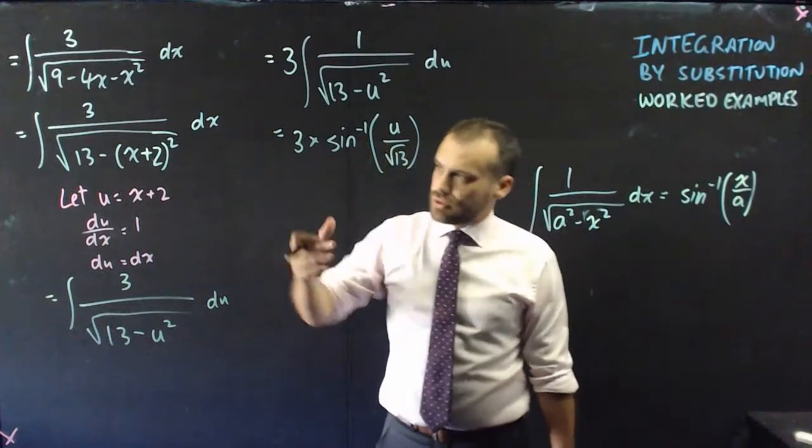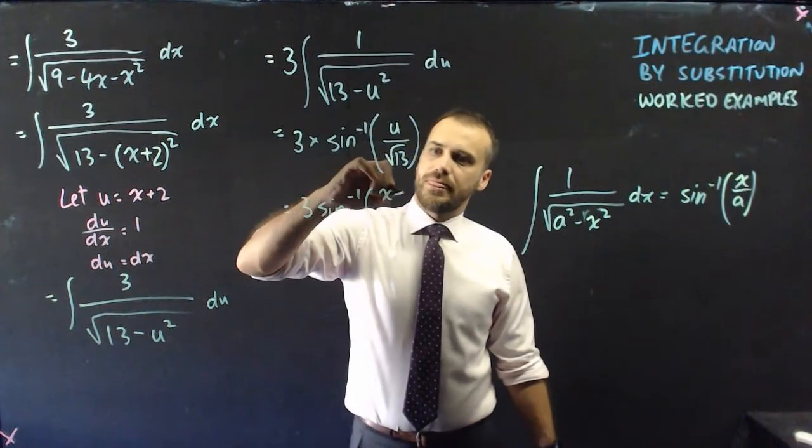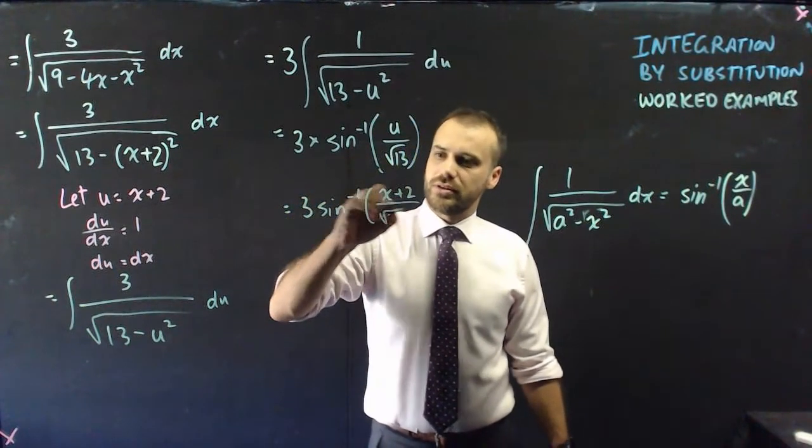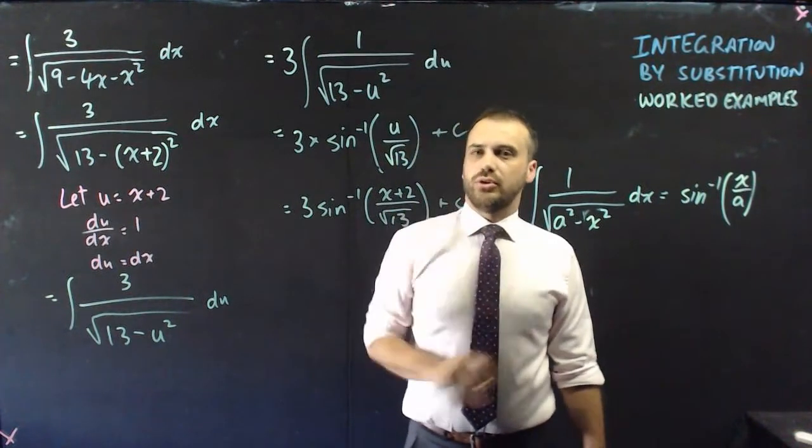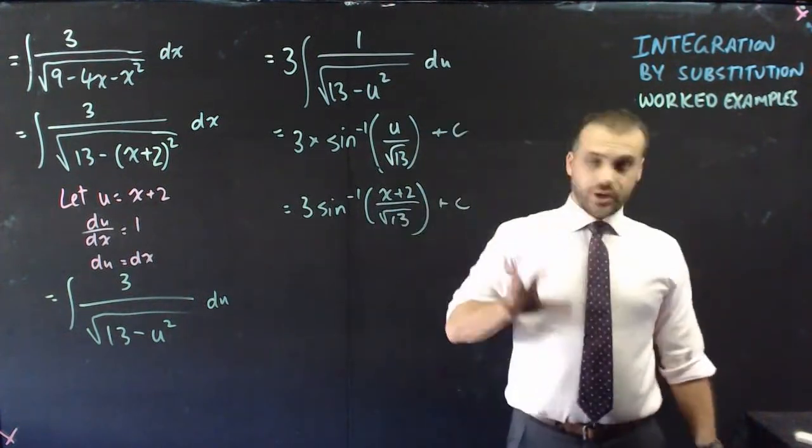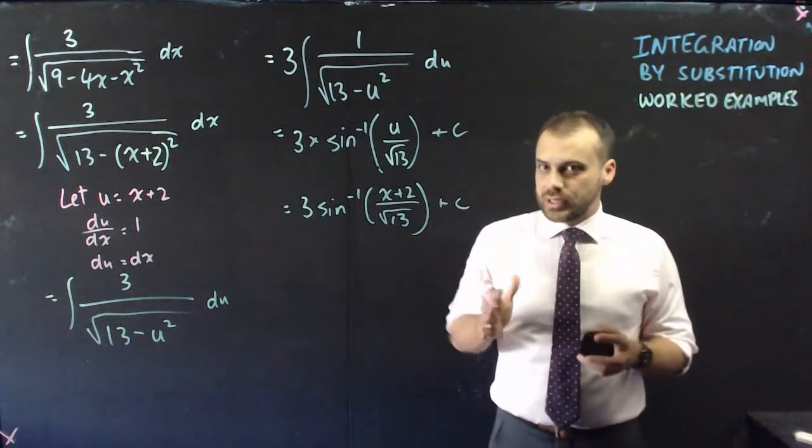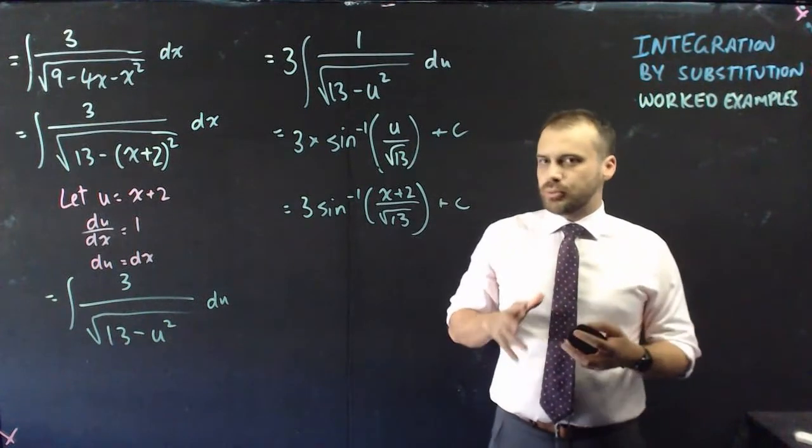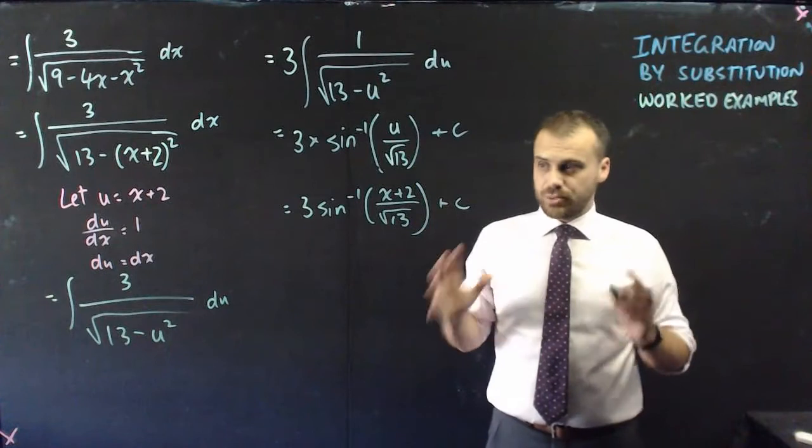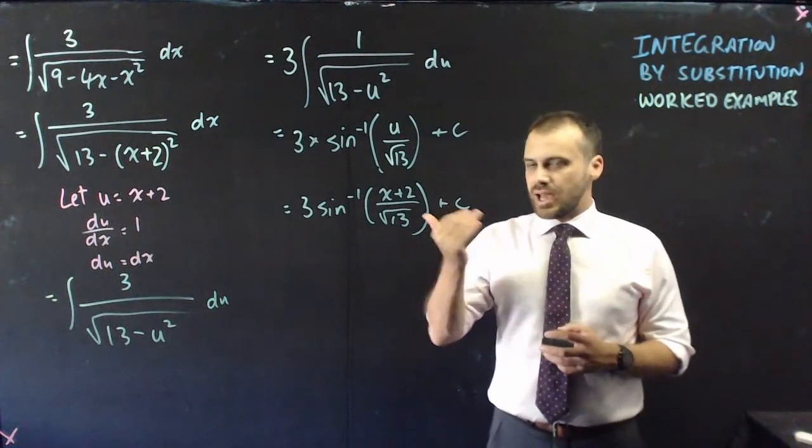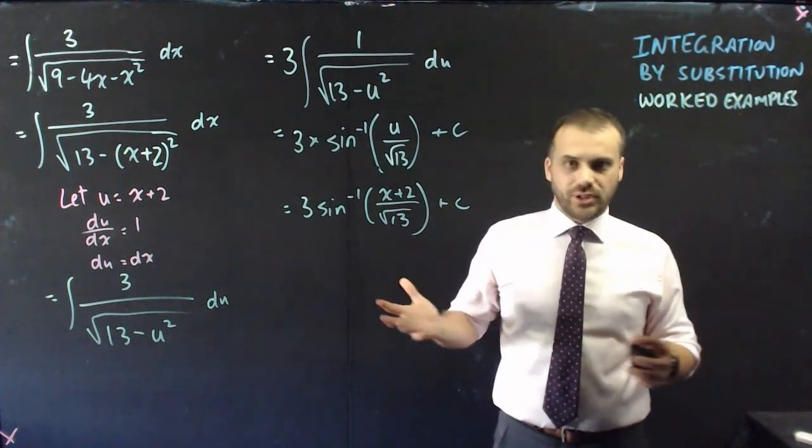Finally, u is not u, it's x plus 2. So, we have 3 inverse sine, x plus 2 over root 13. Don't forget your plus c's. All right, that is integration by substitution. Now, you'll notice there that I made some logical leaps that you might not be comfortable making. The key here is to practice. Practice, practice, practice, and you'll get better at spotting the patterns and the things that you need to do to make all of this happen. Good luck.